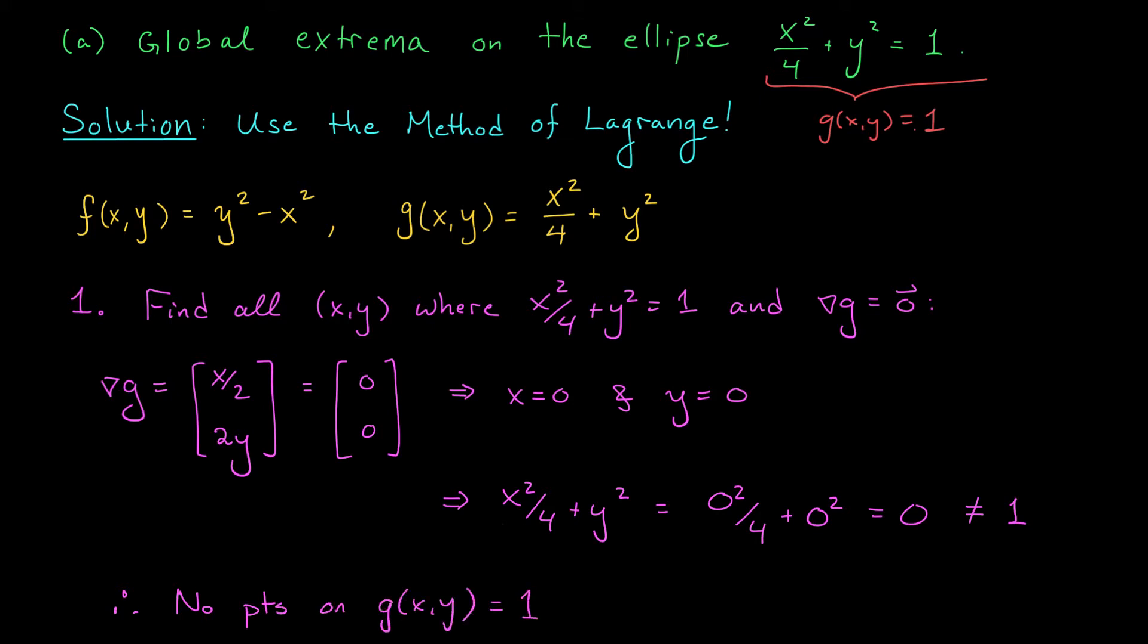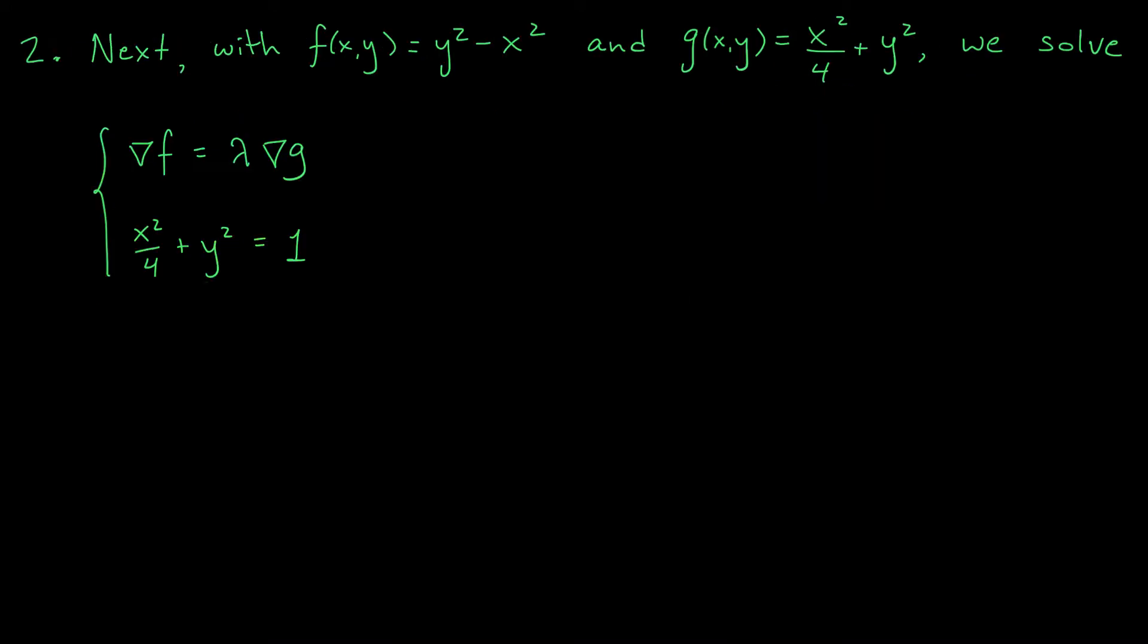Okay, that's a good thing. We have no problematic points on our constraint curve. We can now move on to the meat of the problem, solving the Lagrange equation. All right, moving on to step 2.